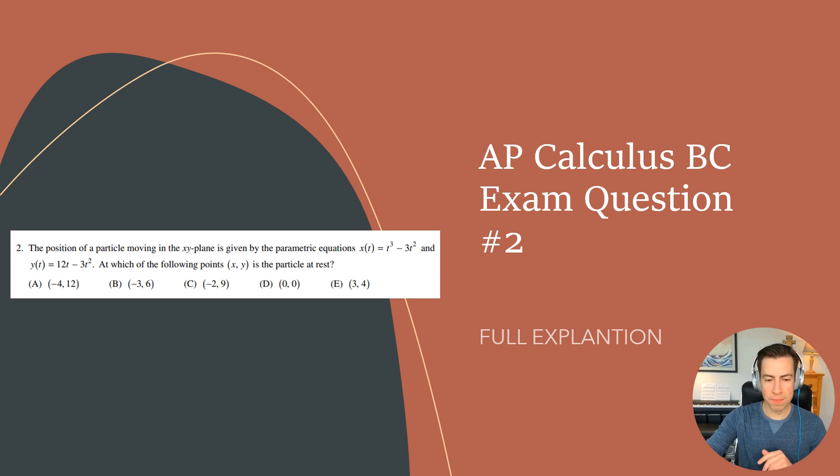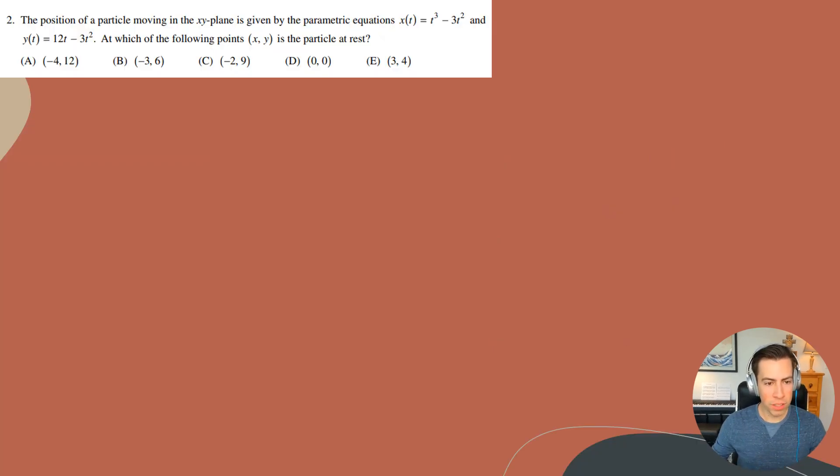Question number two, here we go. The position of a particle moving in the xy plane is given by the parametric equation x(t) equals t cubed minus 3t squared and y(t) equals 12t minus 3t squared. At which of the following points xy is the particle at rest?